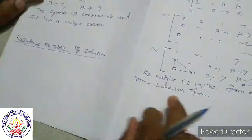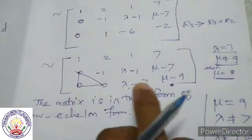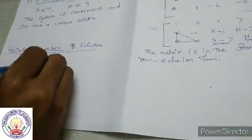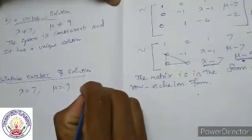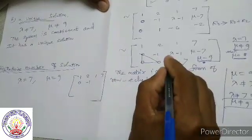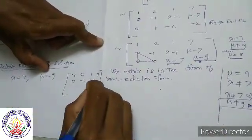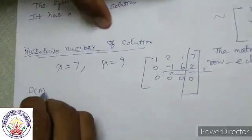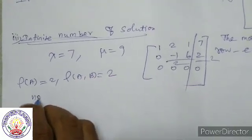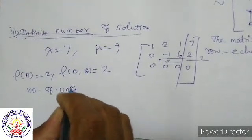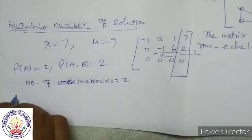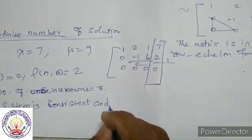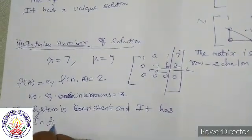Infinite number of solutions: lambda is equal to 7 and mu is equal to 9. The last row becomes all zeros. Rank of A is equal to 2, rank of AB is equal to 2, but number of unknowns is equal to 3. The system is consistent and it has an infinite number of solutions.